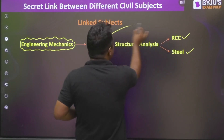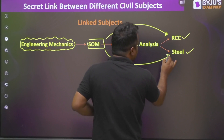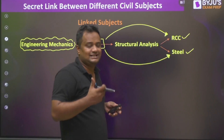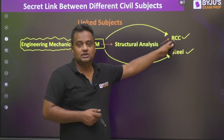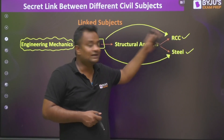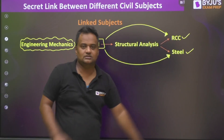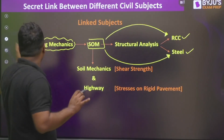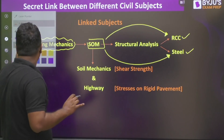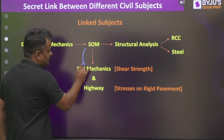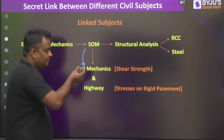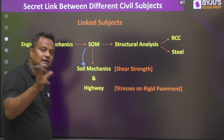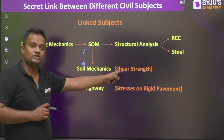After SOM and Structural Analysis, RCC and Steel can be done. Although they can be done directly after SOM, I recommend doing Structural Analysis first so you get a better understanding of RCC — because some end moments, supports, and movements are required in the slab chapter for continuous supports. For Soil Mechanics, the shear strength chapter requires Mohr circle knowledge from SOM. Without knowing the Mohr circle concept, you will not understand the shear strength chapter of soil, which is one of the top three most important chapters.